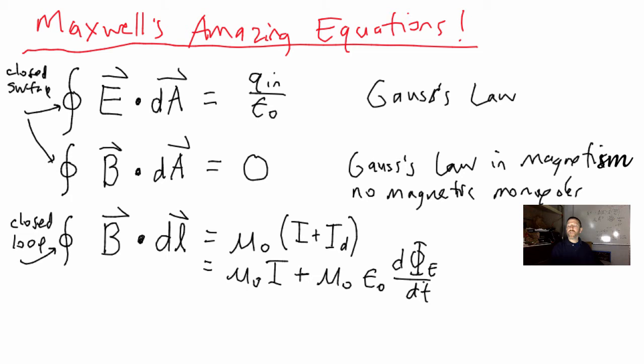And so what this tells you is that, and by the way this is called right there, this section right there is called the displacement current. It's not a current, it's a changing electric flux. This basically tells you that a magnetic field may be created by a current or by a changing electric flux.